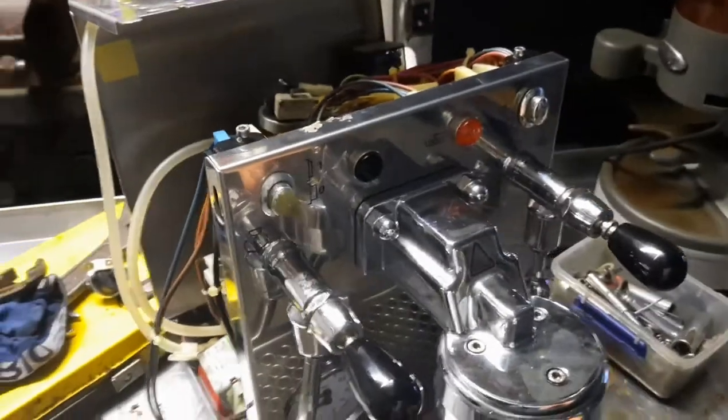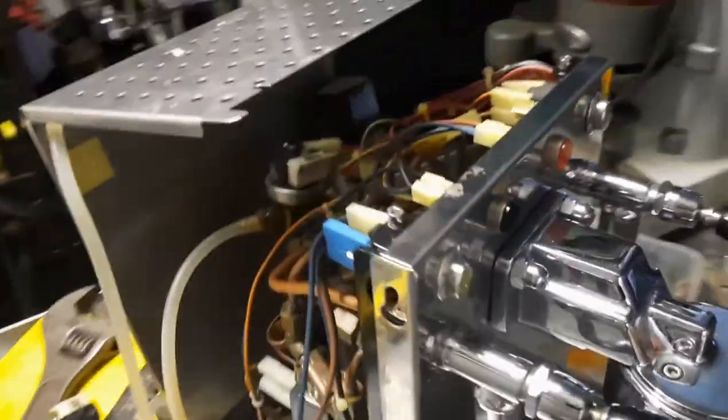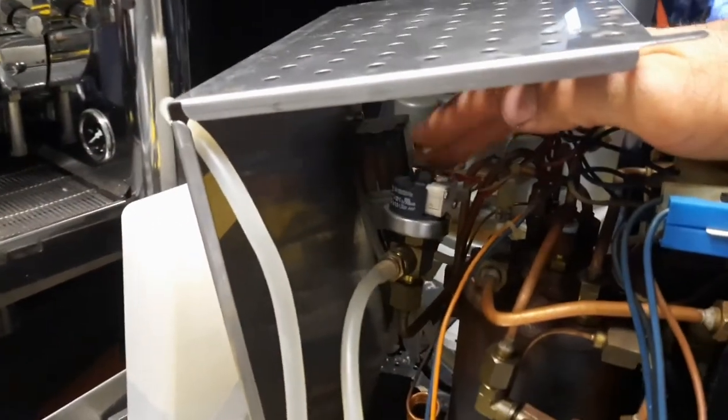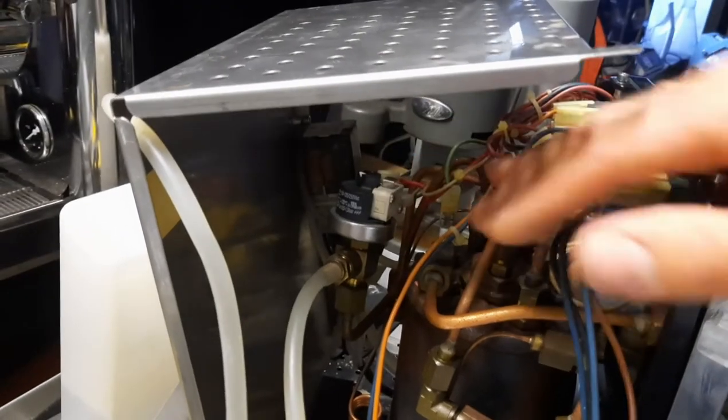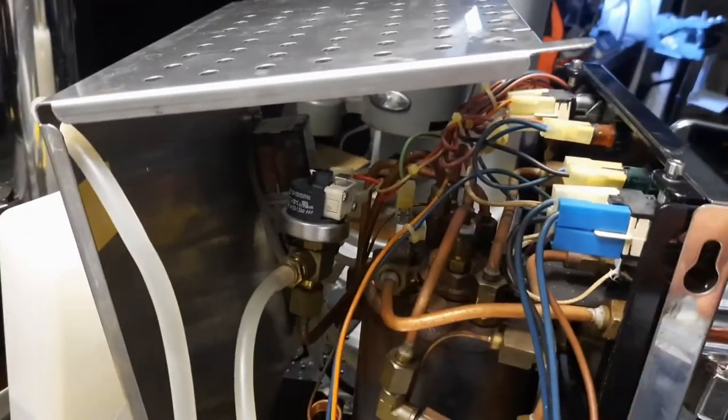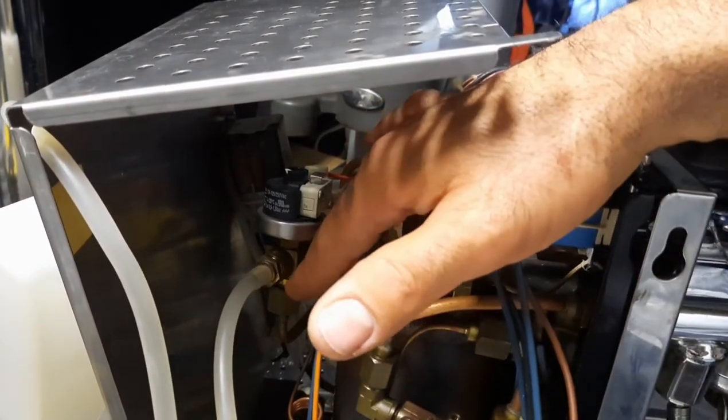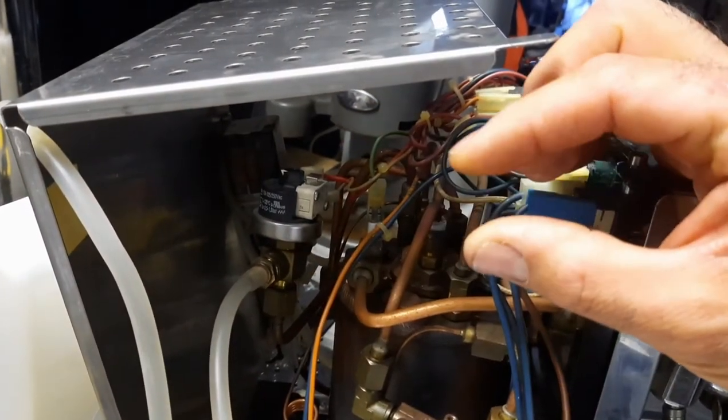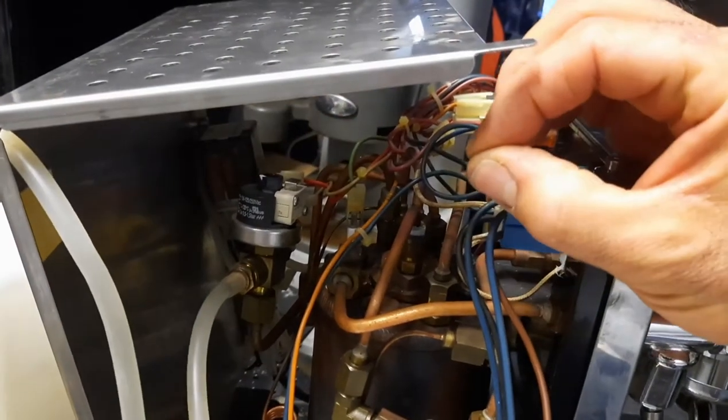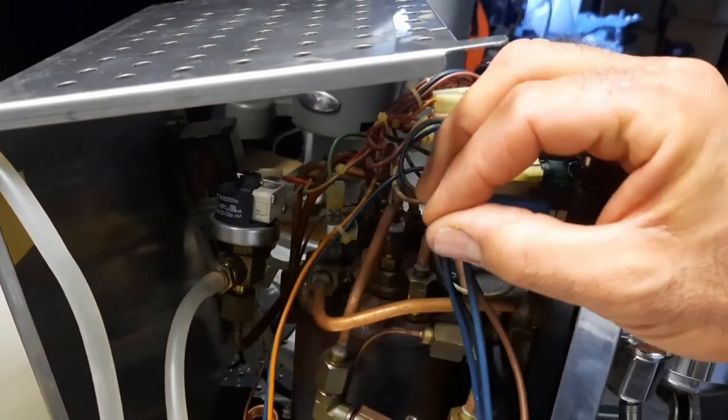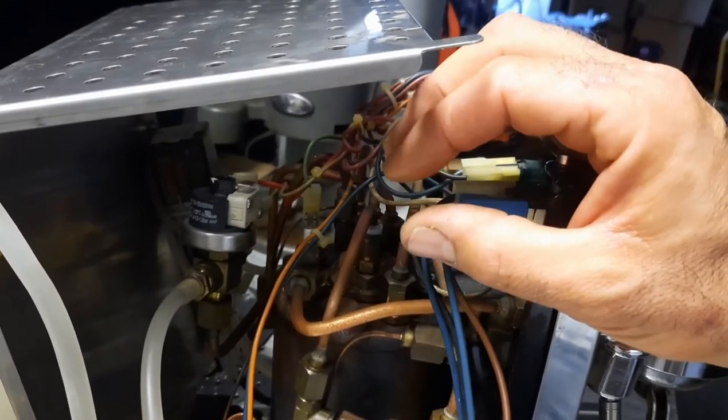So I could send it back to the customer and say, okay, your machine's ready. But I've spoken to him and we're going to change the pressure stat, which is this fella here. The way the pressure stat works is as the element's on, when it gets to temperature, the pressure in the boiler actually opens up a tiny little switch on the side here. And when the pressure drops, it will close again.